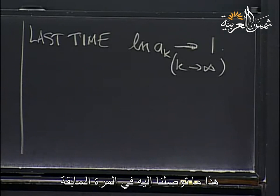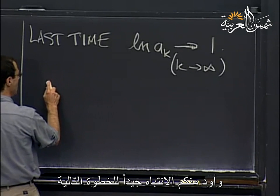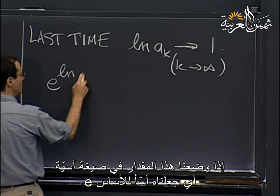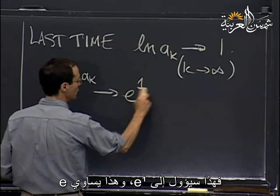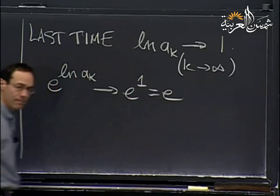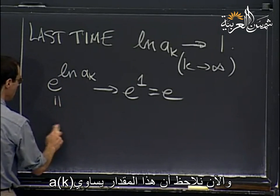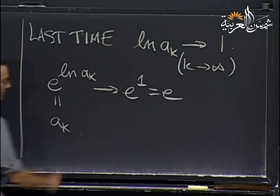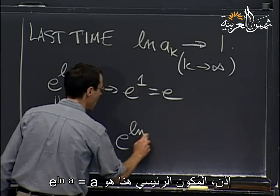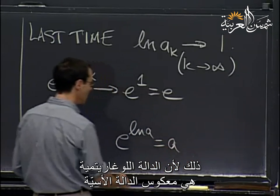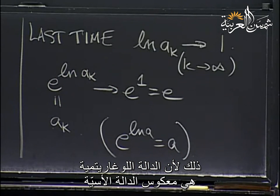So last time, this is what we did. If you exponentiate this fact — take e to this power — that's going to tend to e to the first power, which is just e. And then we observe that this is the same as A_K. The basic ingredient here is that e to the log A equals A, because the log function is the inverse of the exponential function.